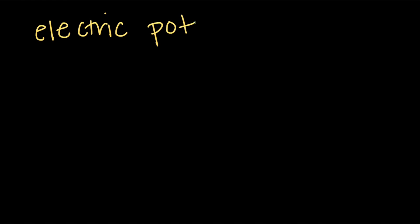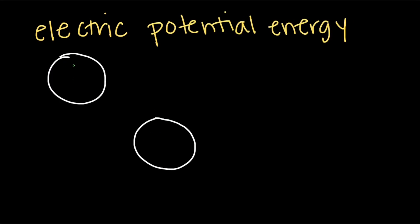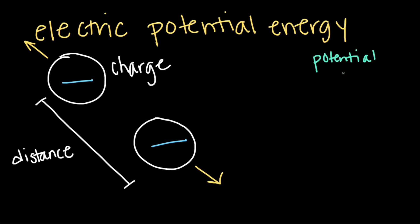Now electric potential energy, which is the potential energy a charged object has due to the electric force from another charged object. Opposite electric charges are attracted to one another, and similar electric charges are repelled, so the potential energy depends on what type of charges there are and how far apart they are. Potential energy increases when the charges move opposite the direction of the electric force, for example when two negative charges get closer together.